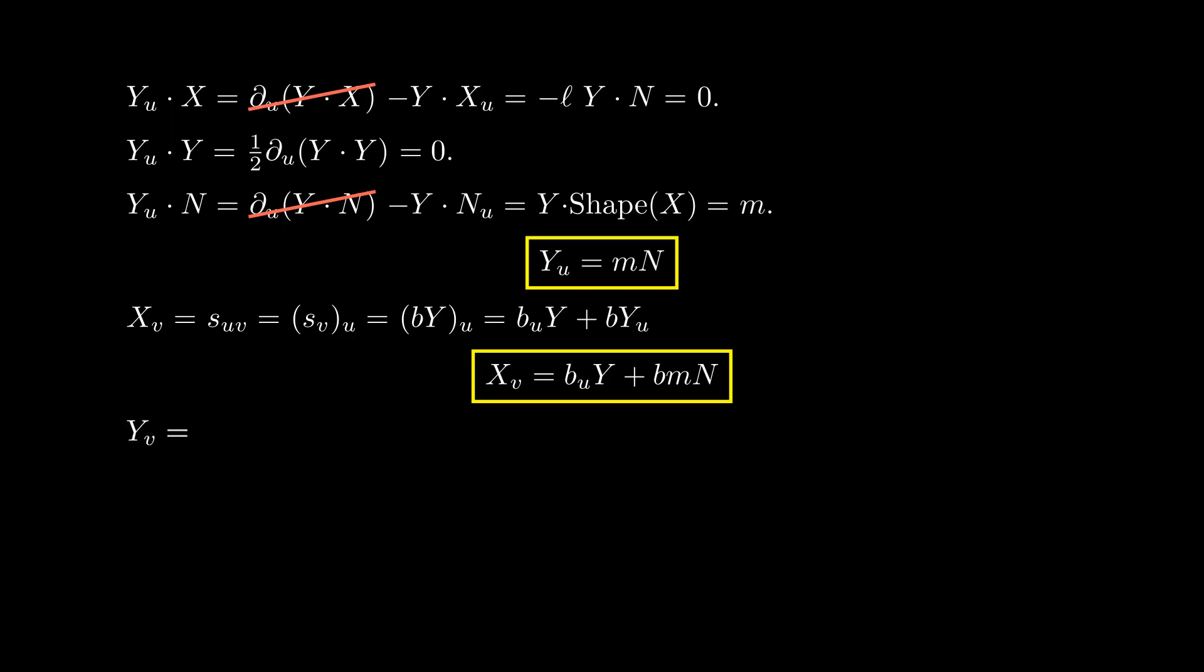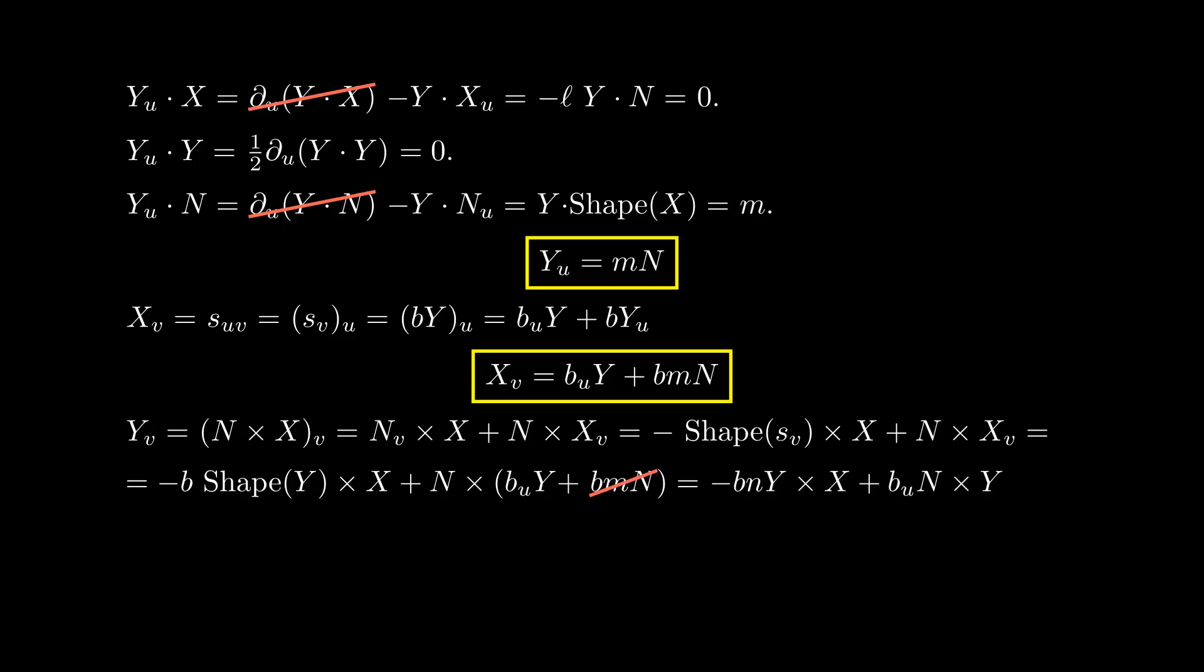The last term in our list is YV. By adjusting our orientation, we can write Y as N cross X. The derivative with respect to V of this expression is NV cross X plus N cross XV. For the first term, we write NV as minus the shape operator applied to SV, and use the fact that SV equals BY. For the second term, recall that XV equals VUY plus BMN. Then the first term becomes minus VNY cross X, and the second one VUN cross Y. Wrapping up, we deduce that YV equals minus VUX plus VNN.